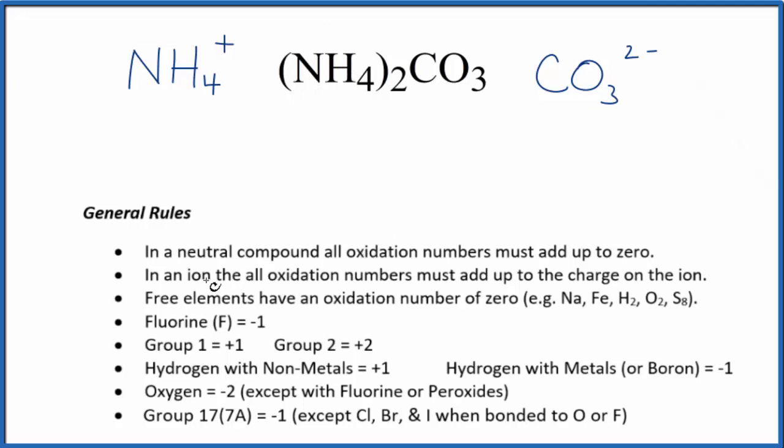For the ammonium ion, we said with an ion, all the oxidation numbers add up to the charge. So we don't know what nitrogen is. We do know that hydrogen, when it's bonded to nonmetals, nitrogen, that's a nonmetal, that'll be a +1. So we have four of them. So we'll have that one times four, and the whole thing is going to equal the charge. So we'll have everything here equals one.